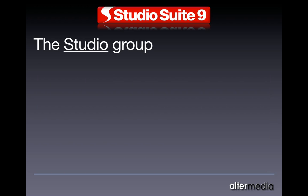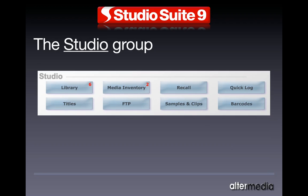The next group is the studio group, which includes the library module — physical and digital asset management — and titles, which are individual songs, cuts, clips, cues, scenes, and spots on a particular library reel. There's also media inventory, which is your blank inventory of tapes, cartridges, CDs, DVDs, P2 cards, etc.